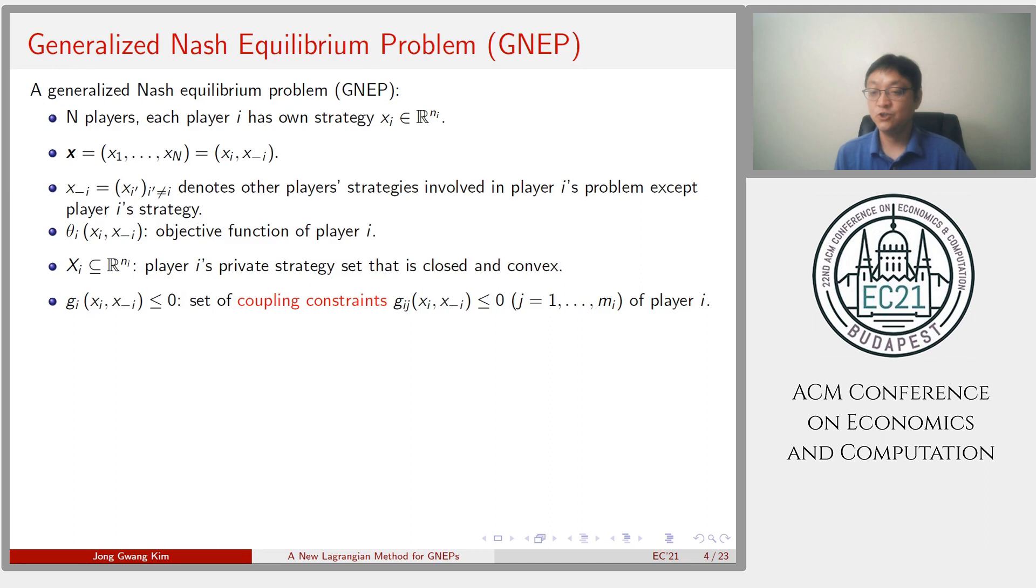There are N players in the GNEP and each player i has strategy x_i. X is a collection of all players' strategy. Here x_{-i} is other players' strategy except player i's strategy. And each player has objective function and private strategy set X_i and a set of coupling constraints.